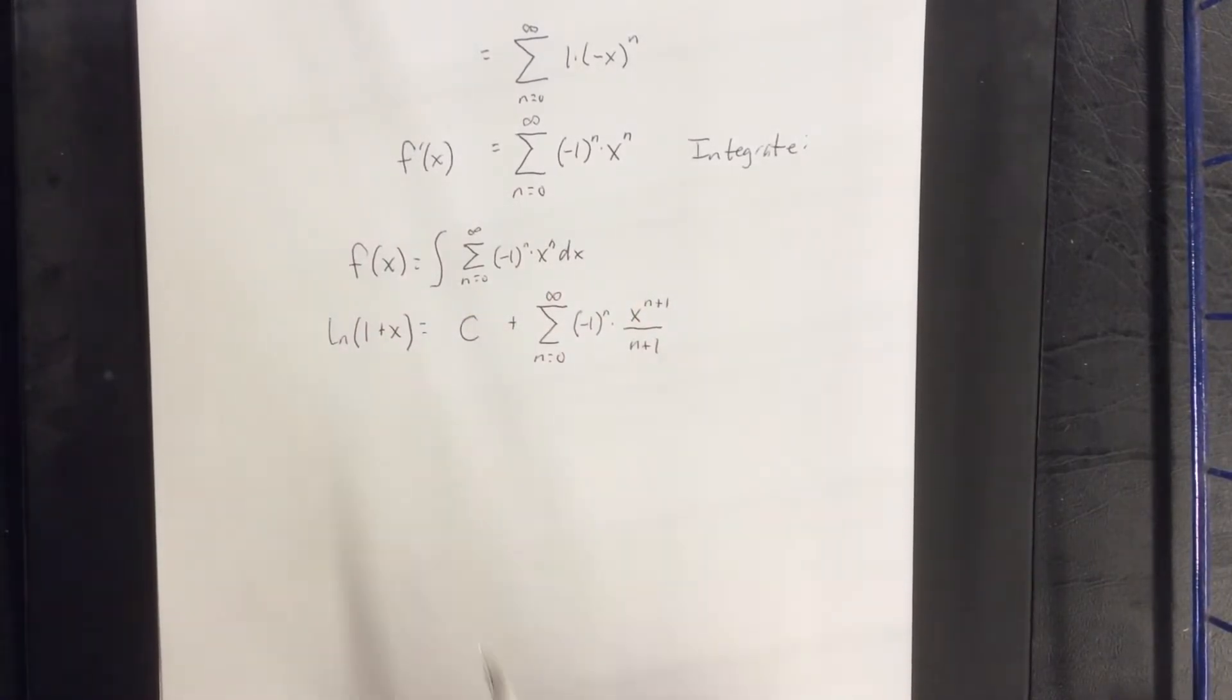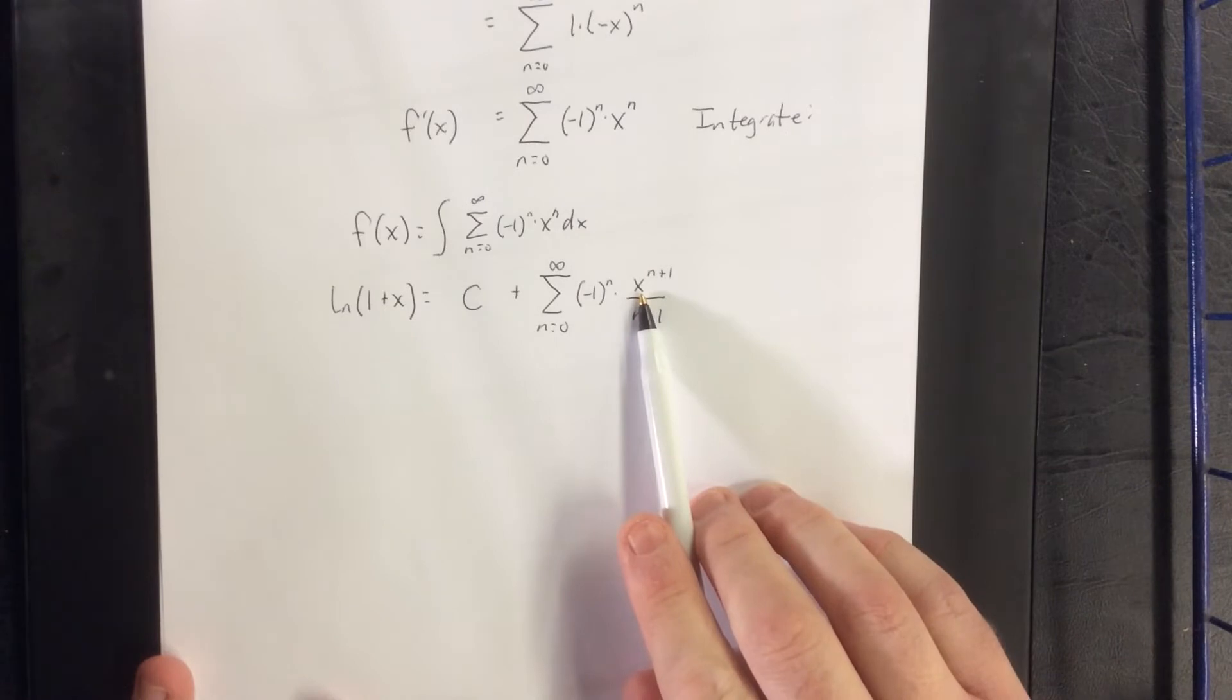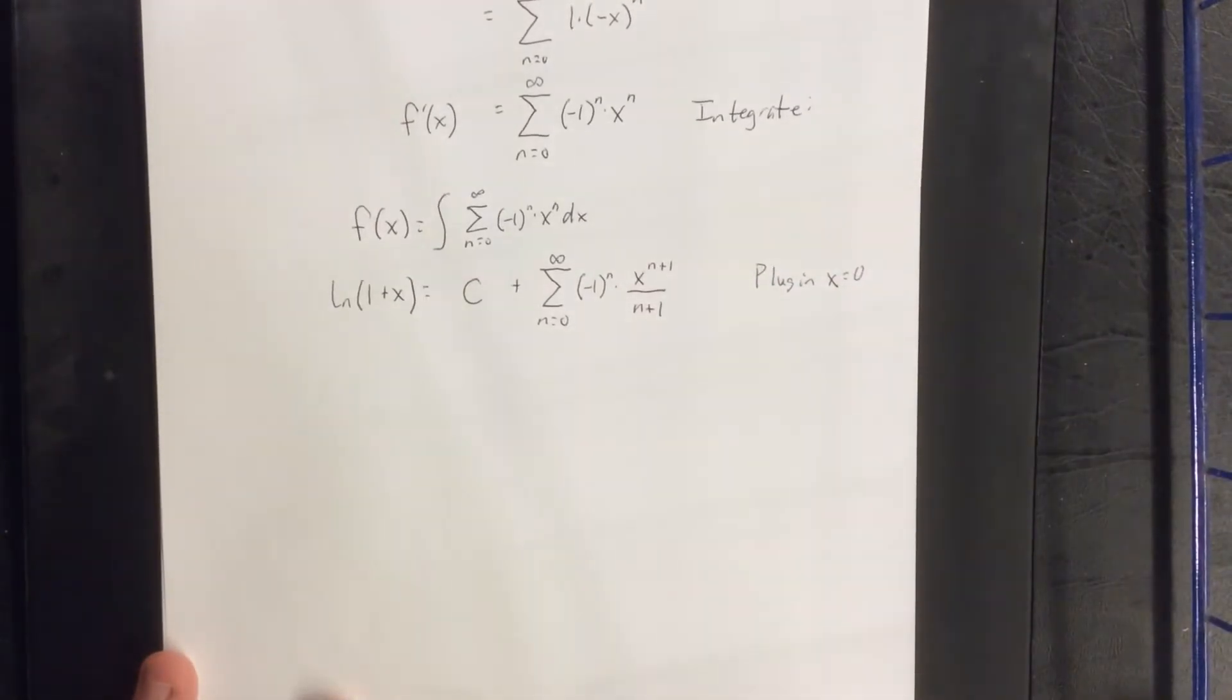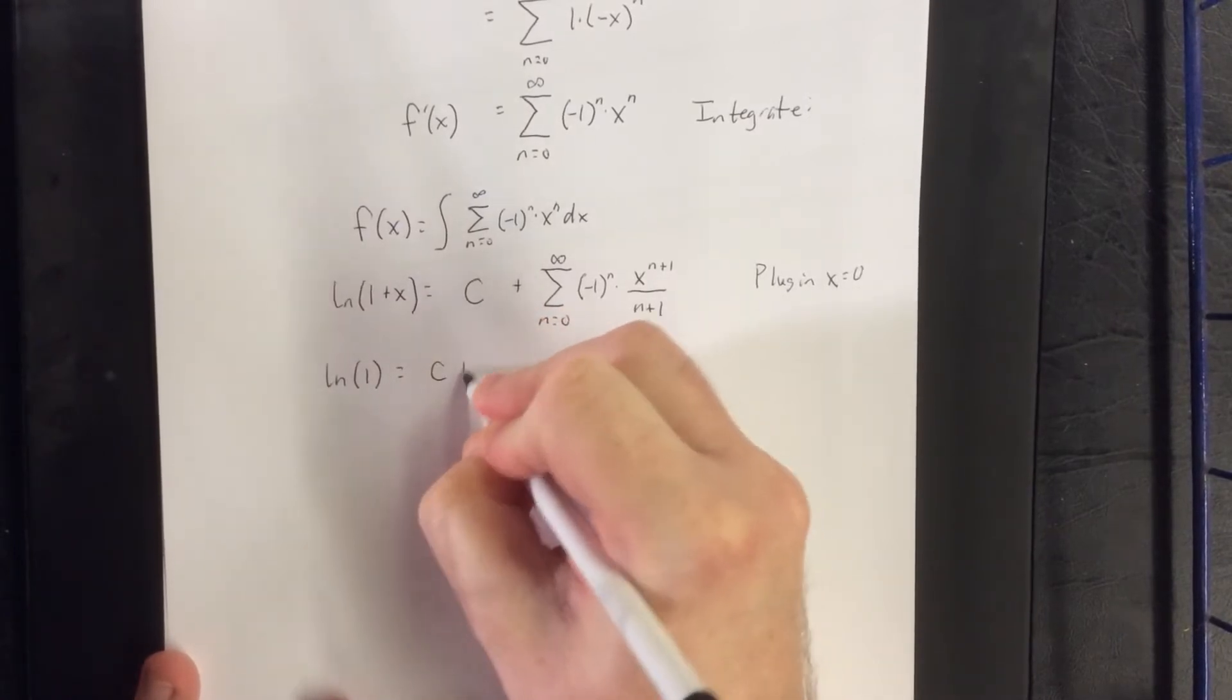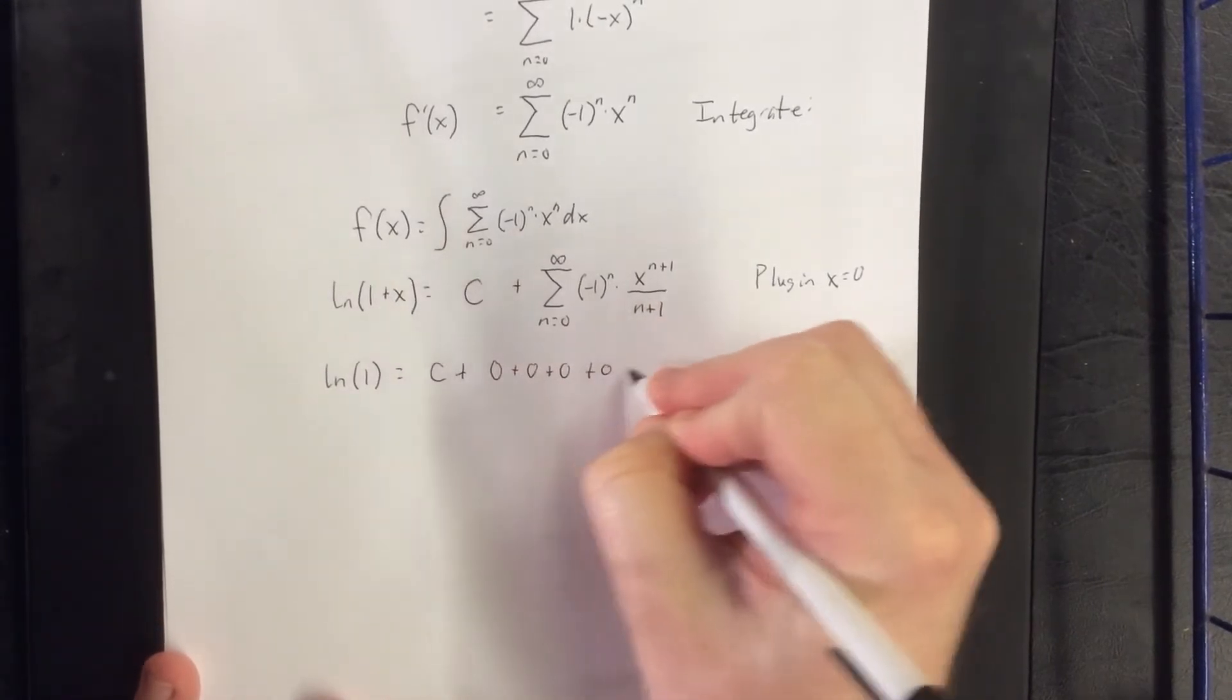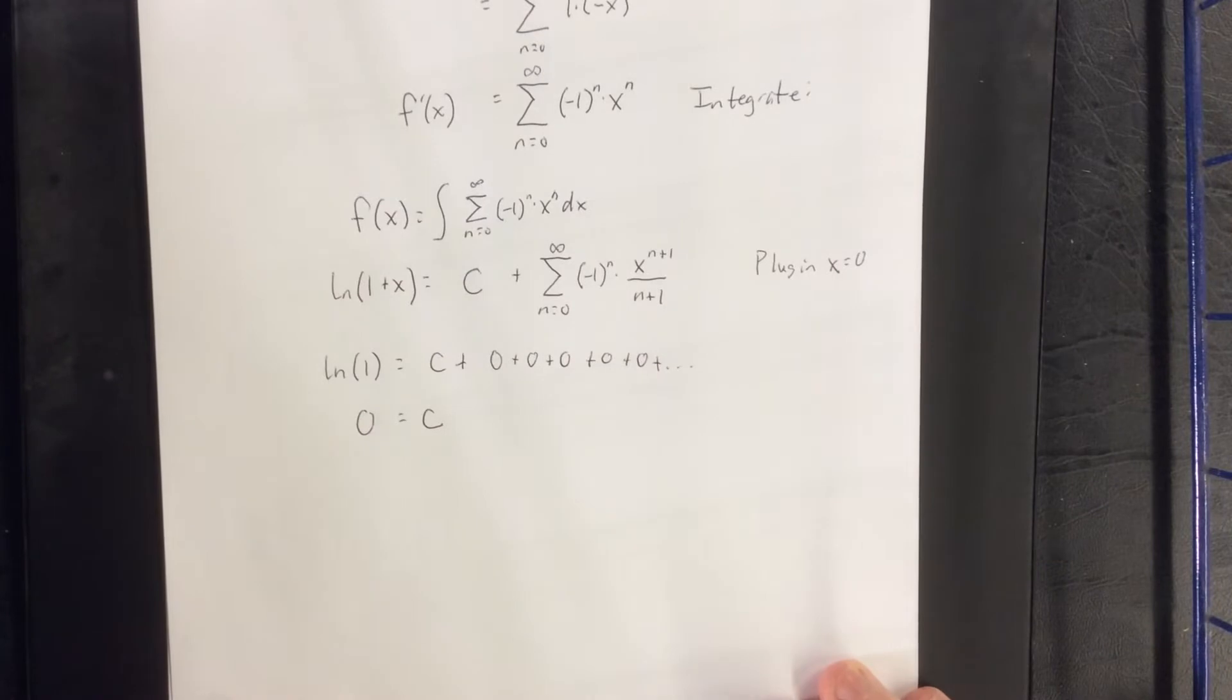Now in order for us to solve for this constant of integration we're going to need to plug in a familiar value. You'll notice that this power series is centered at x equals 0. So I'm going to plug in x equals 0. On the left hand side I would get the natural log of 1. On the right hand side I would get our constant of integration plus every single x that we plug in is going to become 0 after this. Meaning that c is going to be equal to the natural log of 1 which is of course equal to 0.